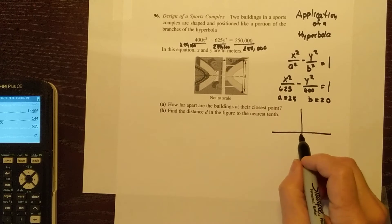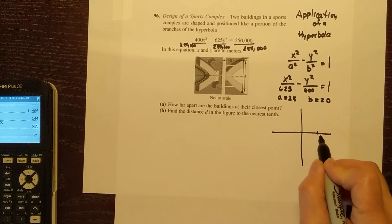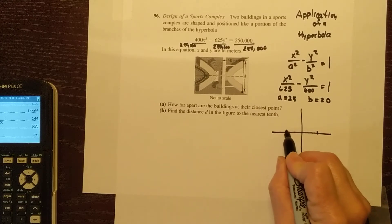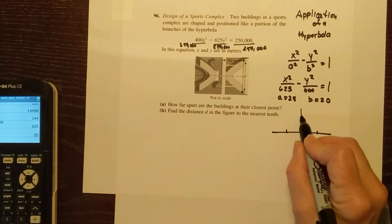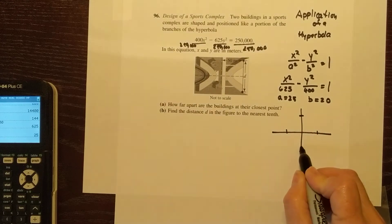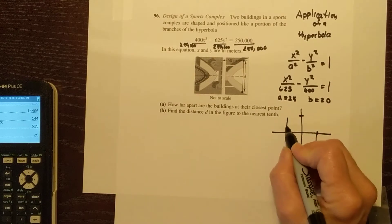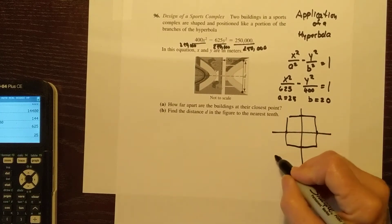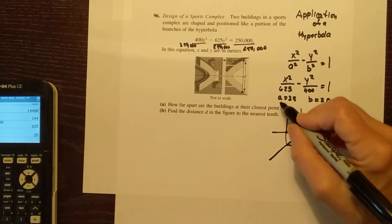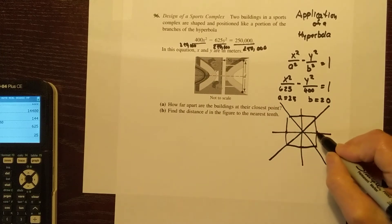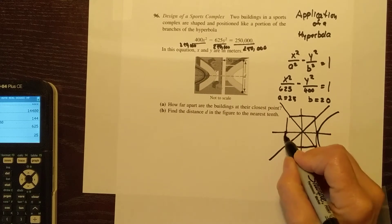So I'm going to go right 25 and left 25, and then I'm going to go up 20 and down 20. This is not to scale, but here's my little rectangle. Here are the asymptotes I can draw, and here is the curve. I just needed to do this so I could talk about what they want me to answer.